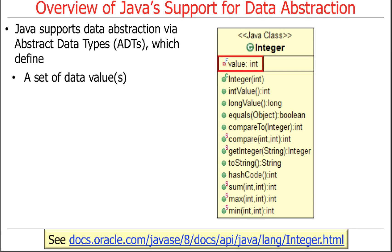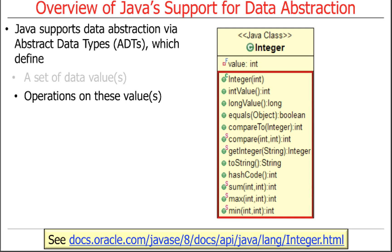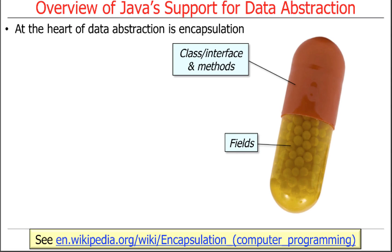An ADT defines a set of data values — like a Java integer with an int as the data value — and a bunch of operations on those values. There are a whole bunch of operations you can use on an integer. At the heart of data abstraction is the concept called encapsulation. Encapsulation is the means by which we enforce the abstraction.